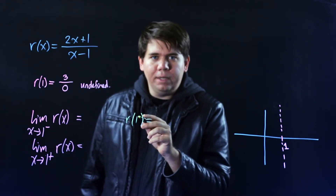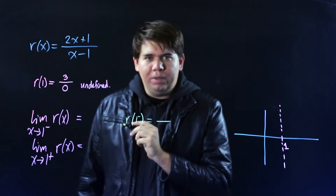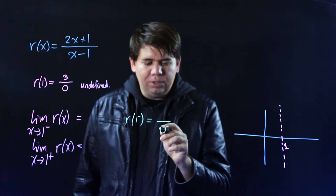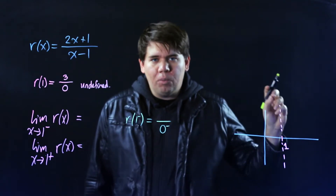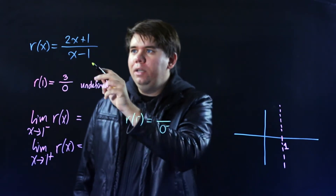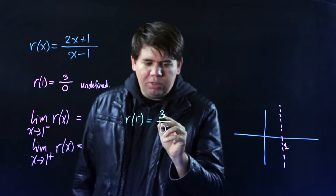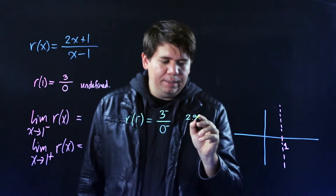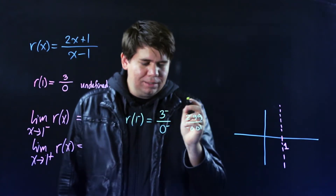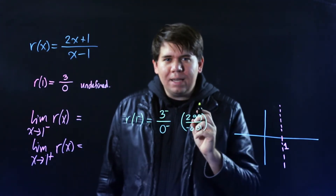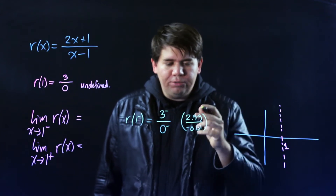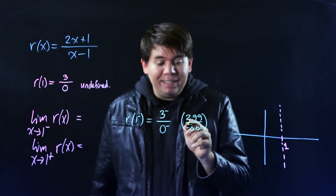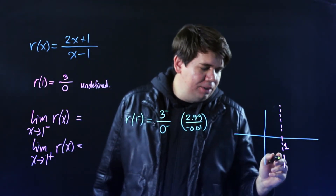If I plug something a little bit less than 1 in, on the bottom I subtract 1 and get a tiny negative number — something like negative 0.01. On top, multiplying by 2 gives a little less than 2, and adding 1 gives a little less than 3. So intuitively this is something like 2.99 divided by negative 0.01. It's a solid number divided by a tiny negative number, so it blows up to a really large negative value.